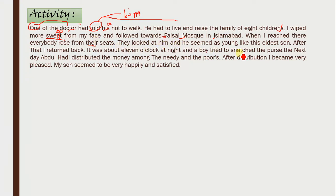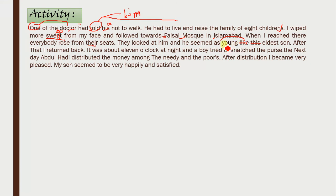'He seemed as young like this eldest son.' Two mistakes: first, it should be 'his eldest son.' Second, 'like' is wrong — it should be 'as young as.' When comparing two subjects, 'as...as' is used as a pair — 'he is as beautiful as I am,' 'as intelligent as he is.' 'Like' is not used here.